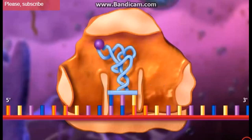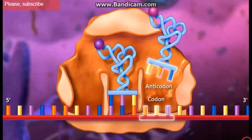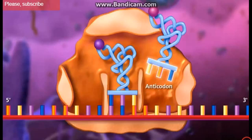During elongation, individual amino acids are brought to the messenger RNA strand by a transfer RNA molecule through complementary base pairing of the codons and anticodons. Each anticodon of a transfer RNA molecule corresponds to a particular amino acid.